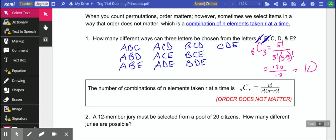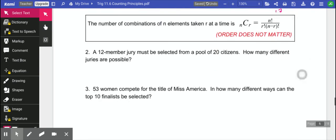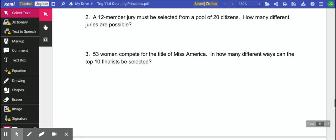Again, we very seldom use the formula. You have this button on your calculator, both on the scientific and the graphing calculator. So we have a 12 member jury has to be selected from 20 people. How many different juries are possible? This is a combination. It doesn't matter what order we pick these people. So we have 20 of them and we are going to choose 12. We always have the bigger number first.